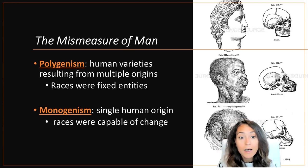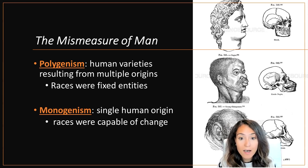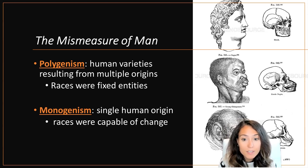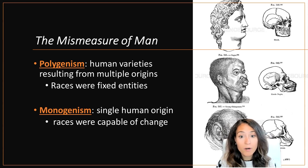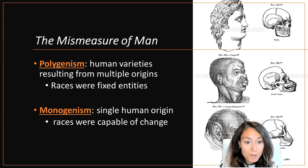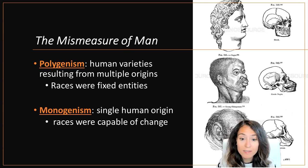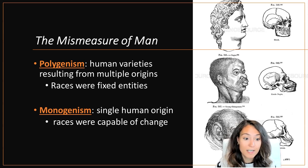In contrast, monogenism argued that human races came from a single origin created by God, and that observed differences between races were based on degeneration or changes over time. Monogenism is really represented by Blumenbach's views, whereas polygenism is represented by Morton's views. Both polygenism and monogenism had racist implications, since many monogenists believed that races other than Europeans had degenerated to what was considered an inferior state.